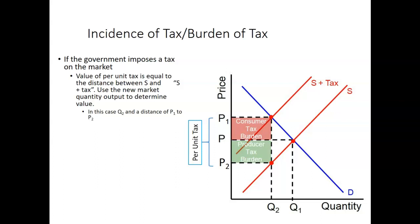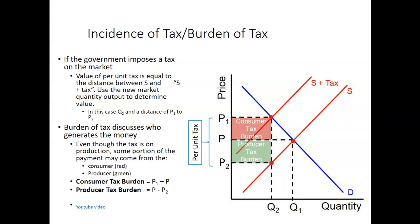So the question is, of that per unit tax, how much comes from the consumers? How much comes from the producers? Well, the burden of tax discusses who generates the money. So even though the tax is on the producers, some portion of that payment is going to come from the consumers. How do I know this? Well, the original price for the consumers was at price P. Because of the tax, the price increased to P1. So because of the tax, the consumers are paying P1 minus P times the quantity that's now purchased. And so that's going to be that red consumer tax burden. So they're paying that portion of the tax.